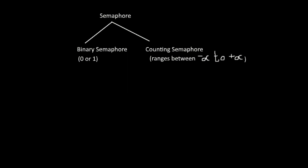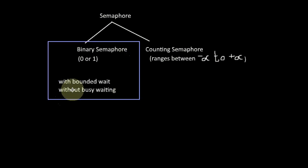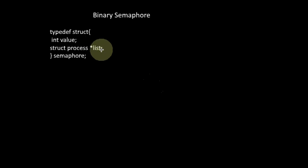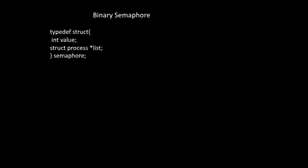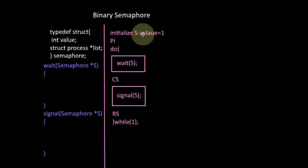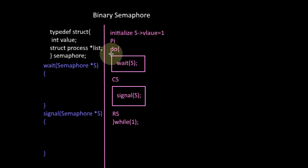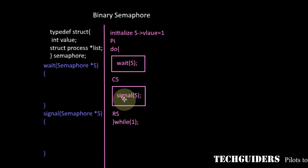Now we are going to discuss the implementation of binary semaphore with bounded wait conditions satisfied as well as no busy waiting. Here the semaphore is associated with not only an integer value but also with a waiting queue of processes. There are two atomic functions: wait and signal. To ensure mutual exclusion, we initialize the semaphore value to one. Before entering the critical section every process executes the wait function as the entry code, and while exiting, the process executes the signal function as the exit code.